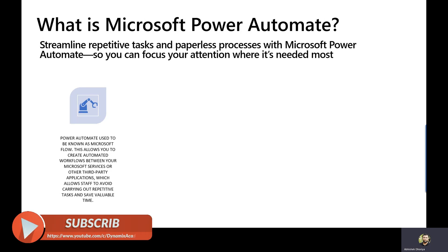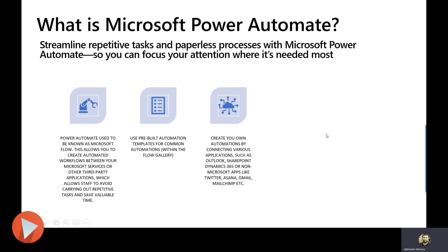You can use pre-built automation templates for common automations, and at the same time you can also create your own automations by connecting various applications such as Outlook, SharePoint, Dynamics 365, or non-Microsoft apps like Twitter, Asana, Gmail, Mailchimp, etc. You can connect to more than 300 different types of applications outside Microsoft with the help of predefined out-of-the-box Microsoft Power Platform connectors to automate your repetitive tasks.